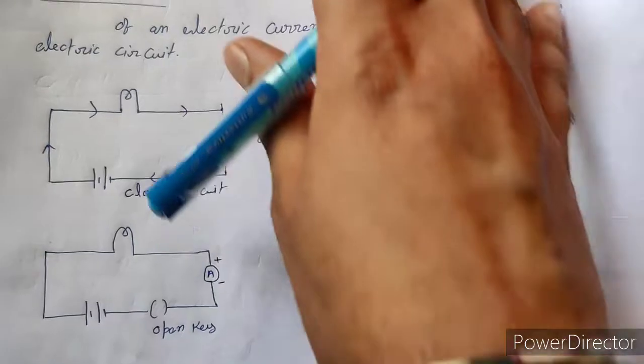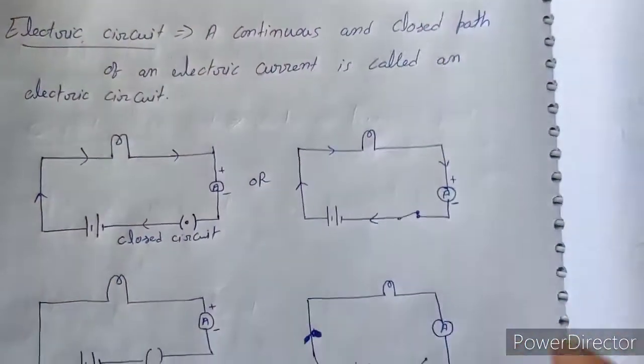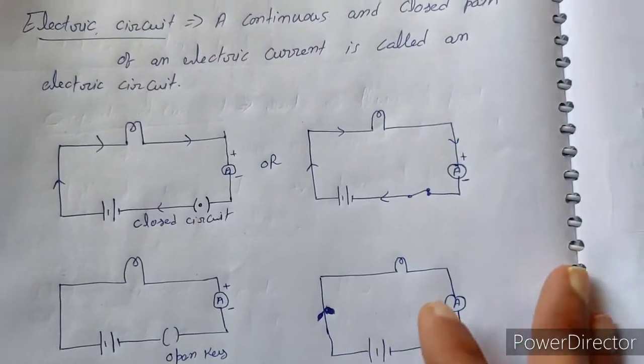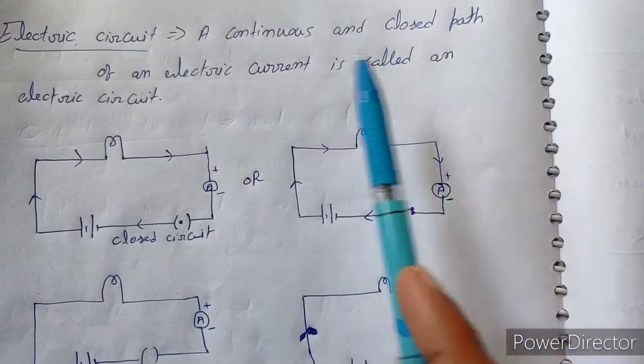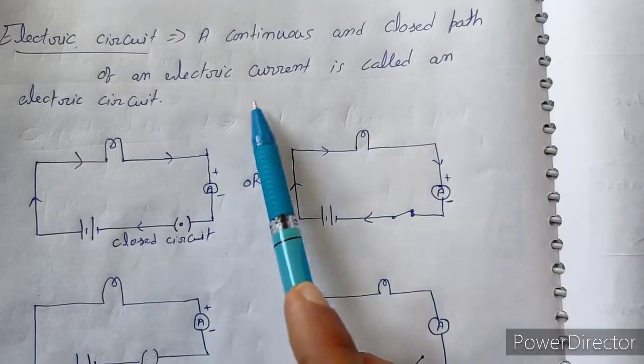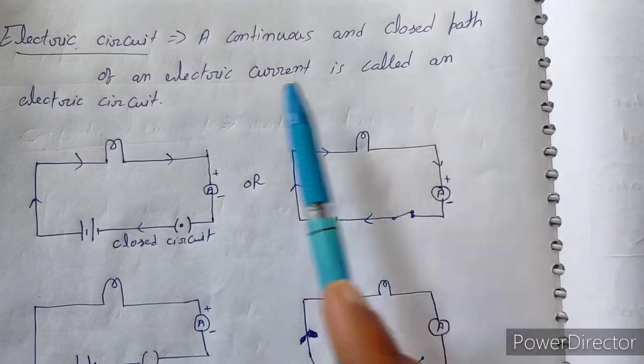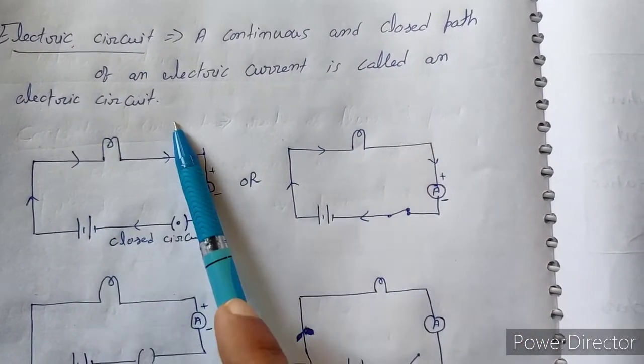Now, electric circuit. What is an electric circuit? A continuous and closed path of an electric current is called an electric circuit.